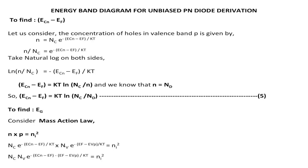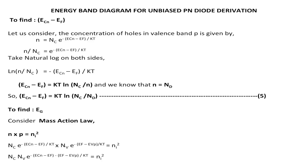Next we move on to the term ECN minus EF. For finding this, we consider the concentration of electrons in the conduction band. The equation is: n equal to Nc into e to the power of minus (ECN minus EF) divided by KT, where Nc is the constant representing the energy level of the conduction band and ECN minus EF represents the difference in energy levels. K is the Boltzmann constant and T is the absolute temperature. Taking natural log on both sides, we get ECN minus EF equal to KT into natural log of (Nc divided by Nd). Consider this as equation number 5.